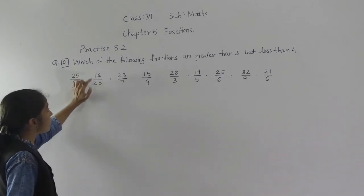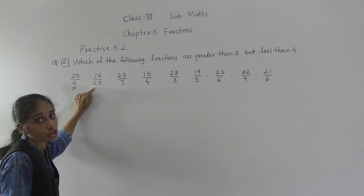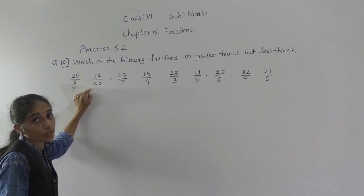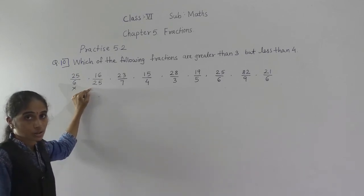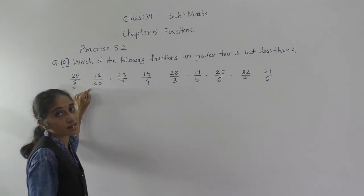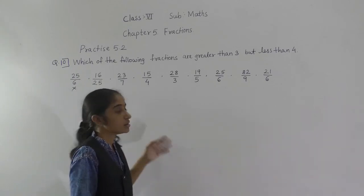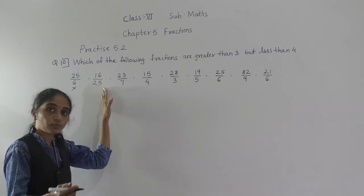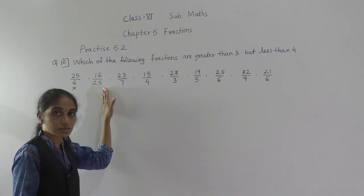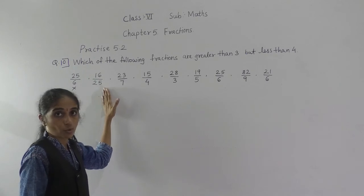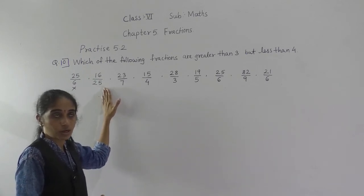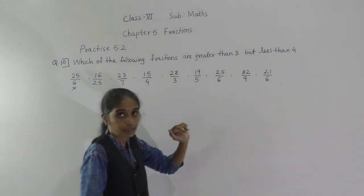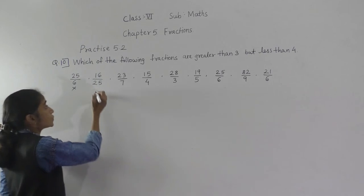Next: 16 upon 25. This is a proper fraction because the numerator is less than the denominator, so it is less than 1. We want fractions greater than 3 but less than 4, so this fraction will also not come.